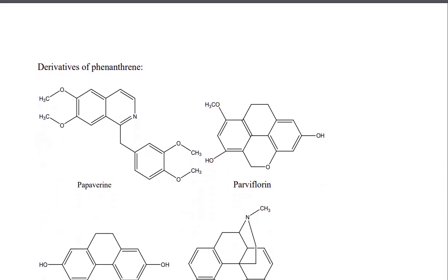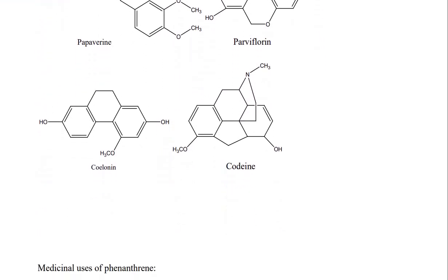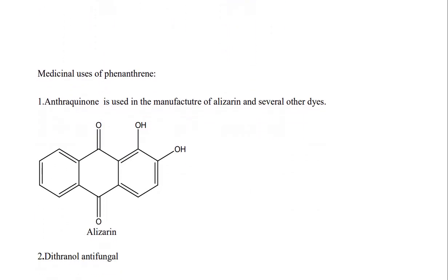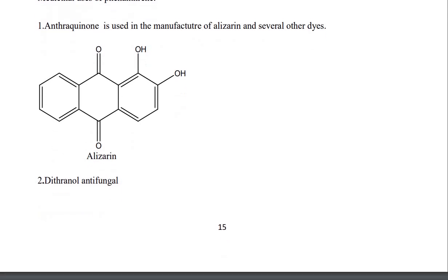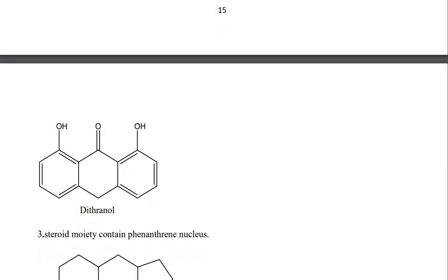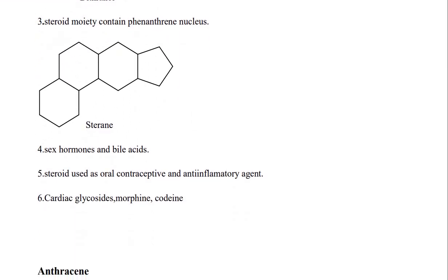Derivatives of phenanthrene include perylene, papaverine, colchicine, and codeine. Medicinal uses include: anthraquinone derivatives used in the manufacture of alizarin and several other dyes; danthron used as an anti-inflammatory agent; steroids including estrane sex hormones, bile acids, oral contraceptives, anti-inflammatory agents, and cardiac glycosides; and morphine alkaloids.